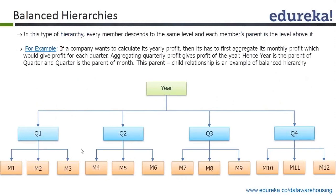In a balanced hierarchy, every member descends to the same level and each member's parent is the level directly above it — there is no skipping and each parent has the same number of children at each level. The example is the time dimension: a year has four different quarters and each quarter has three months, so this is a very balanced hierarchy.